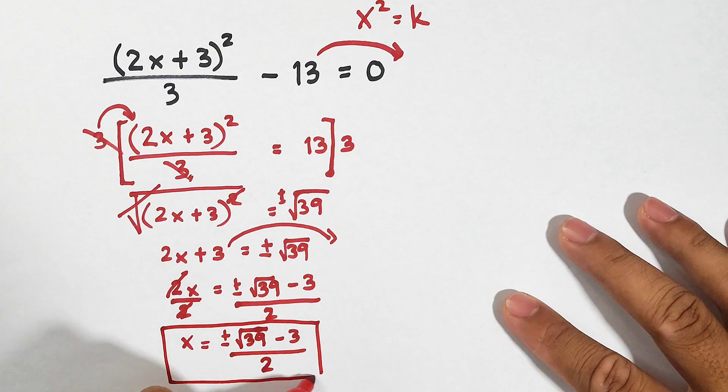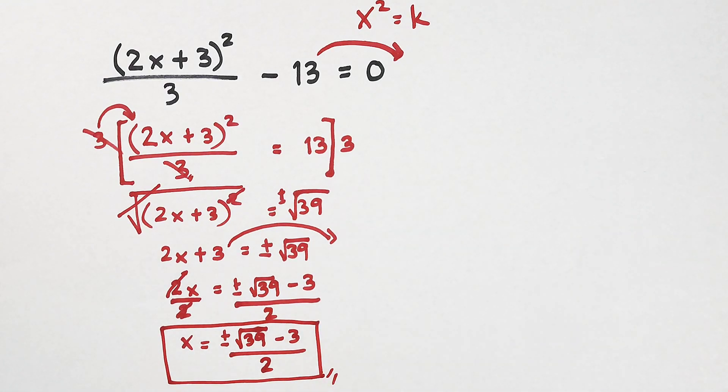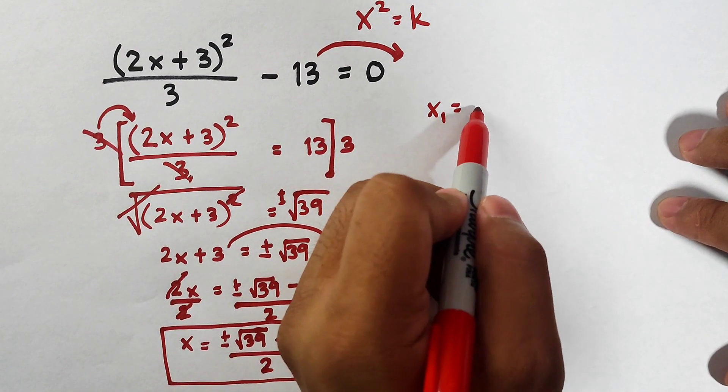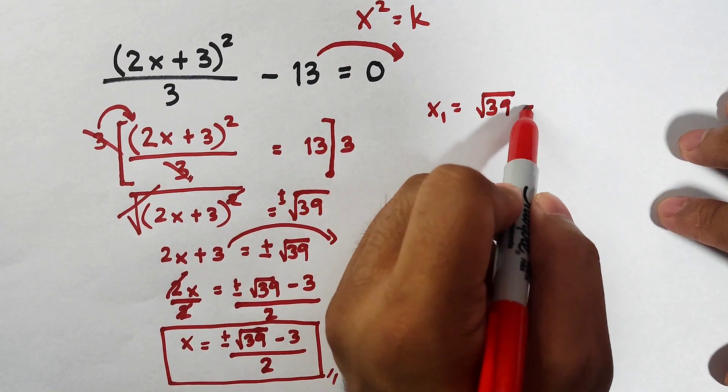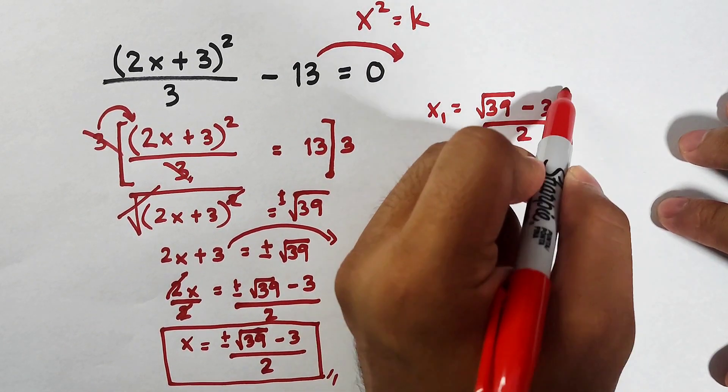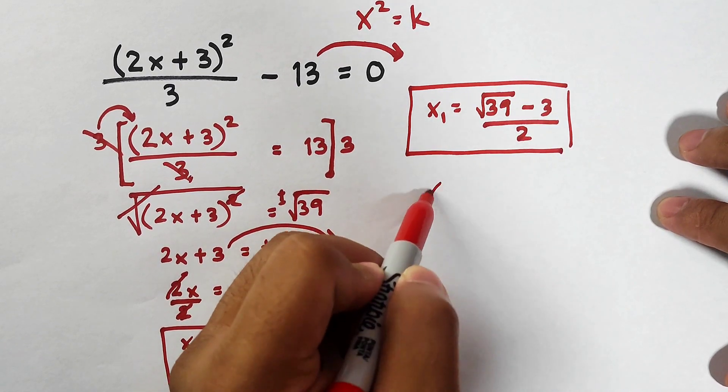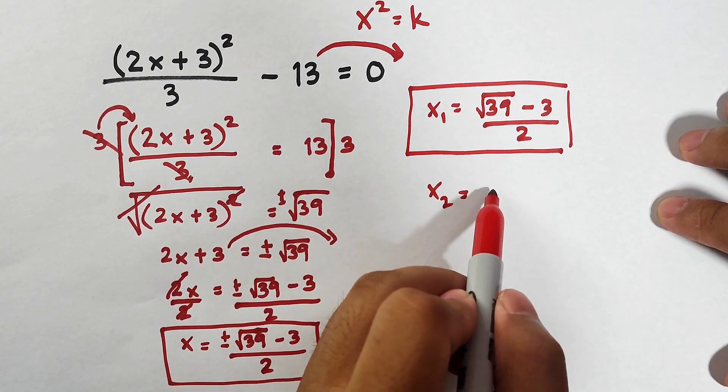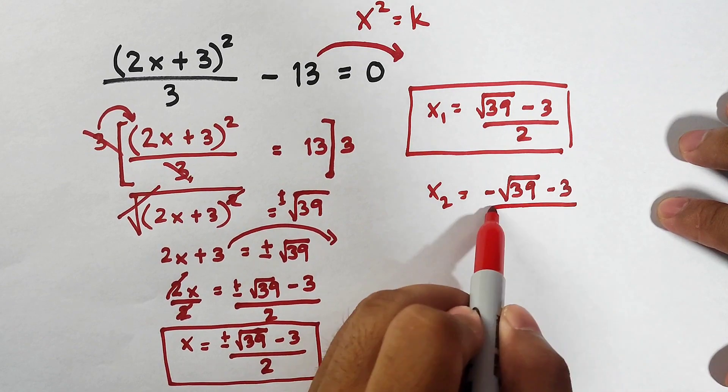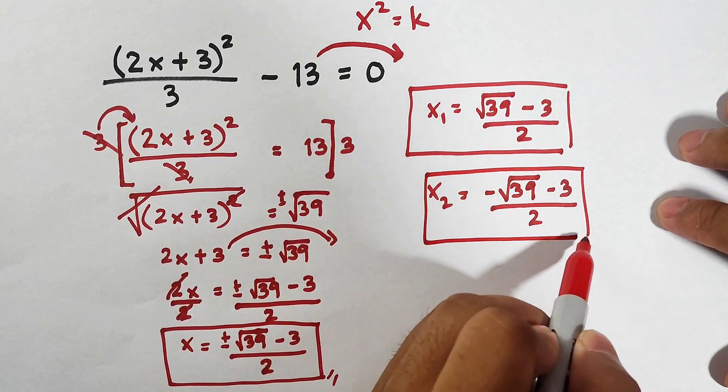Actually guys, this is it. You can consider this one as final answer because we don't have any perfect square factors of 39 and 39 is not a perfect square. But if your teacher wants you to get the solutions separately, you can provide them. Your x sub 1 here, of course positive first, square root of 39 minus 3 over 2. This is the first value of x. For the second value of x, use the negative, negative square root of 39 minus 3 over 2. And these are the possible values of x.